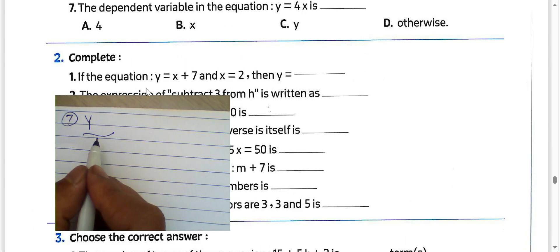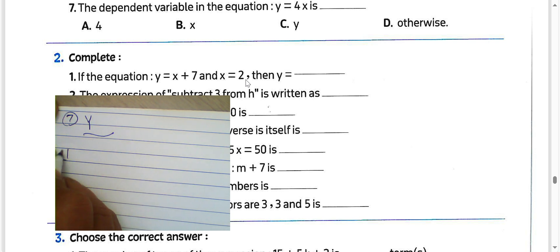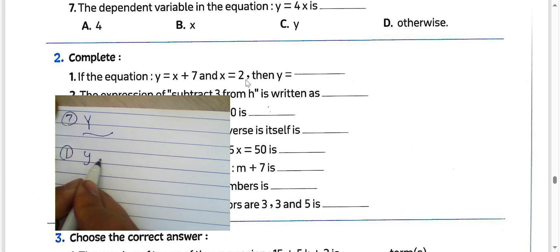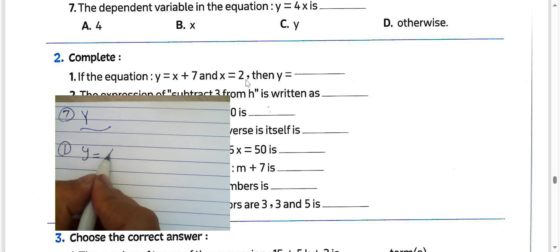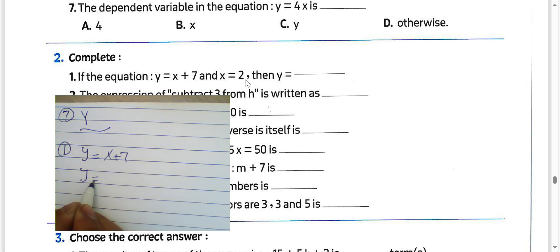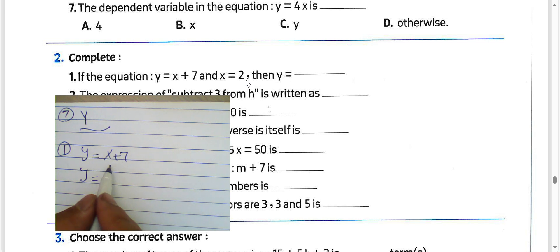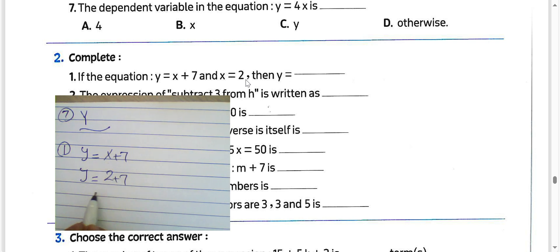Number 1: the equation Y equals X plus 7, and X equals 2. We can find the value of Y. Y equals X plus 7. Put X equal to 2: 2 plus 7. Then the value of Y will be 9.